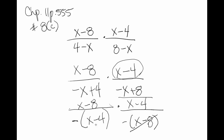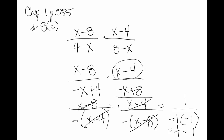Since this cancels with that, and this cancels with that, I'm actually left with 1 over negative 1 times negative 1. Since a negative times a negative makes a positive, this is actually 1 over 1, or just 1, is the answer.